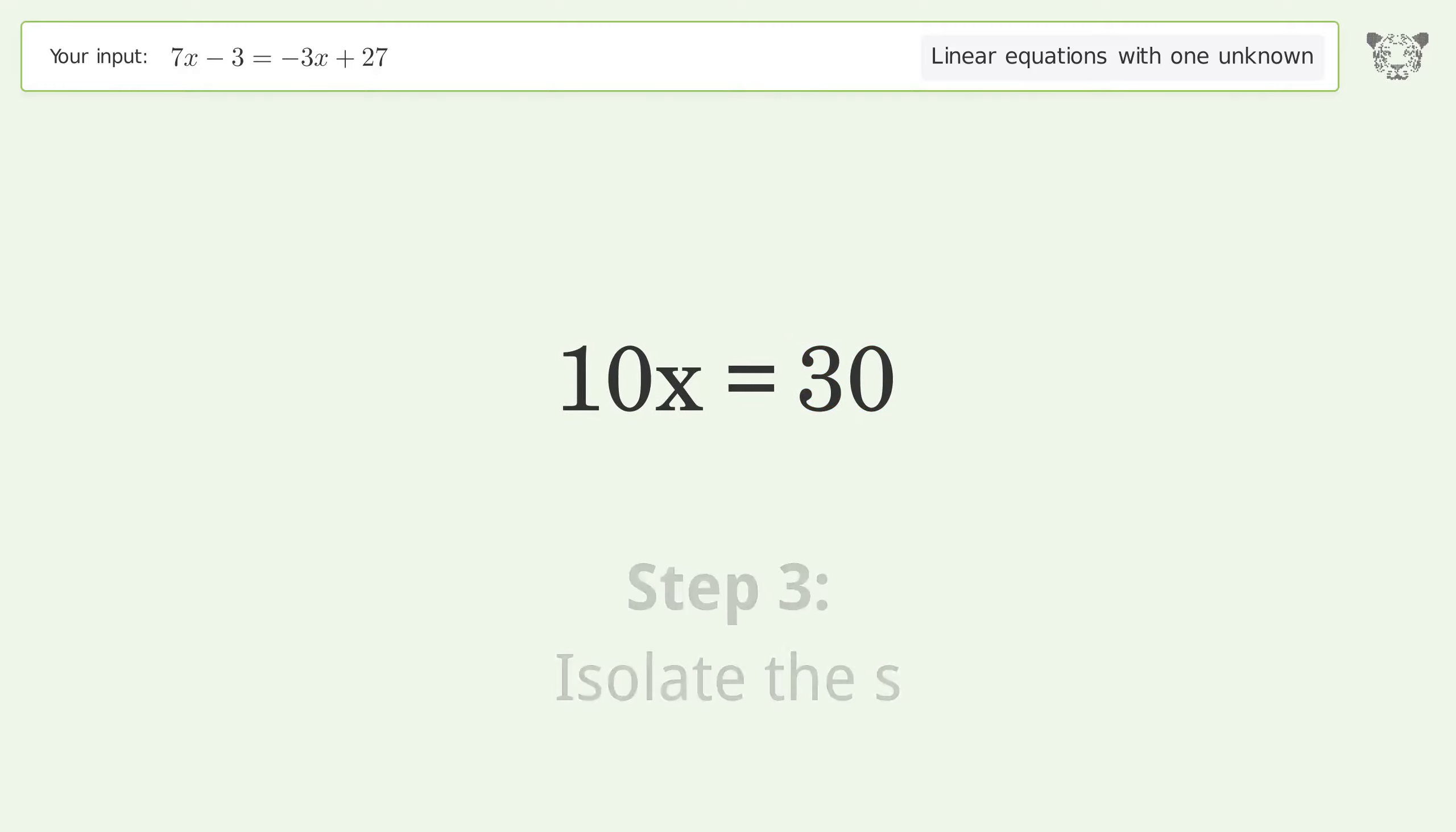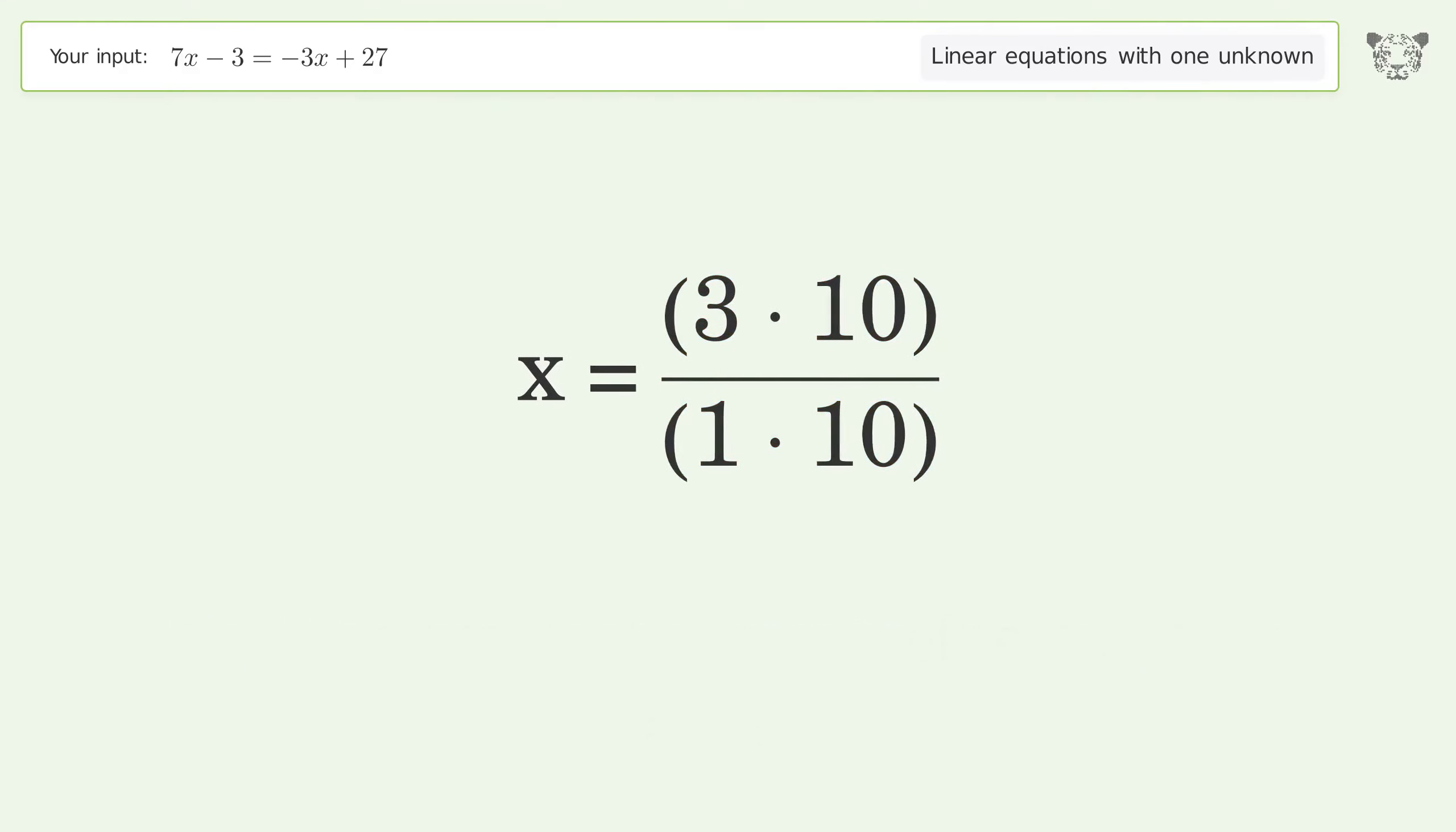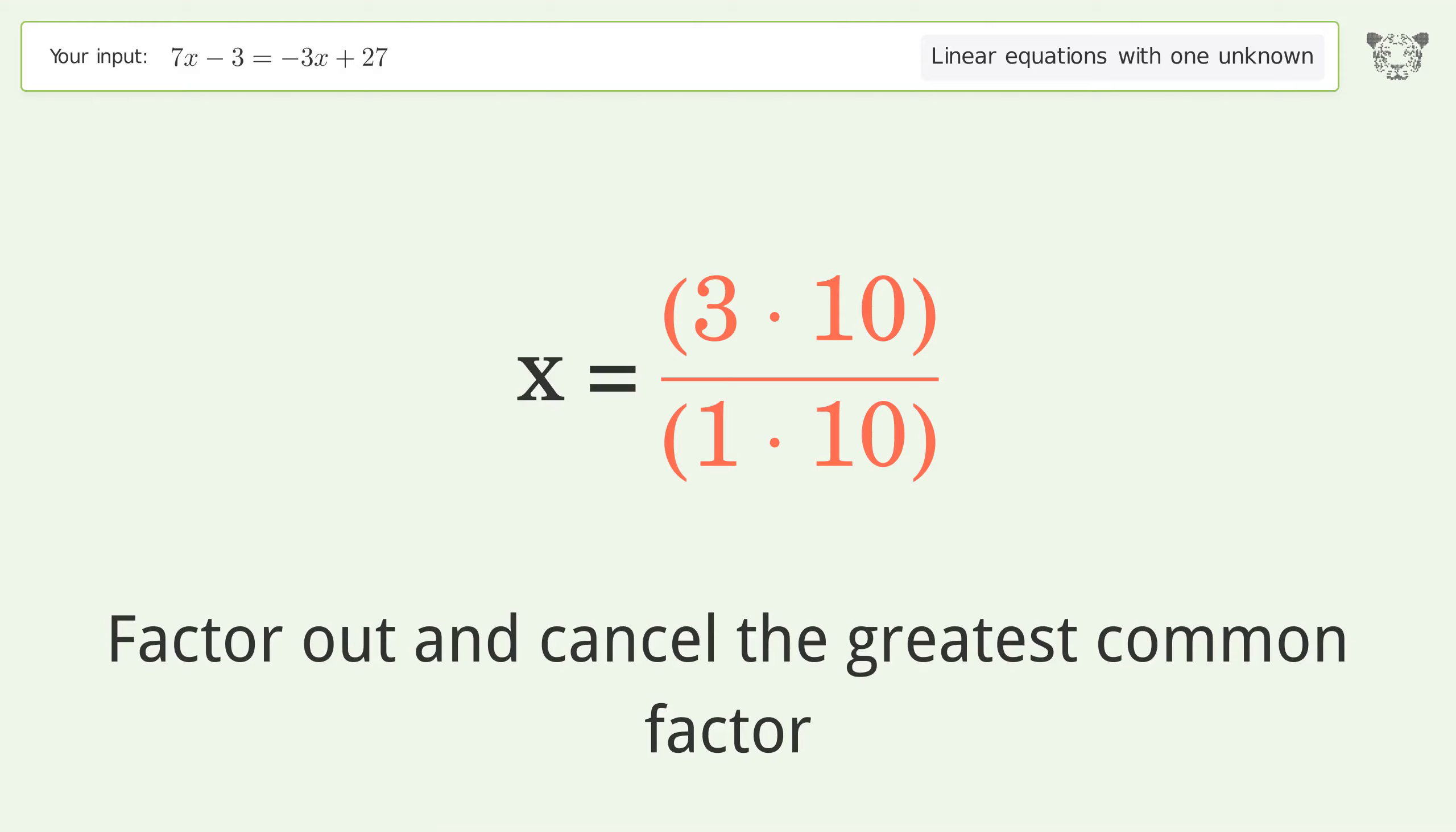Isolate the x. Divide both sides by 10. Simplify the fraction. Find the greatest common factor of the numerator and denominator. Factor out and cancel the greatest common factor.